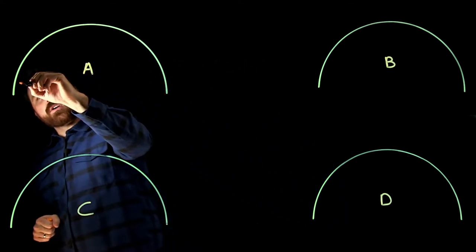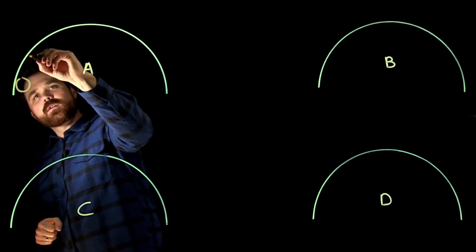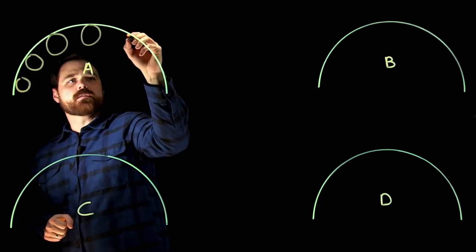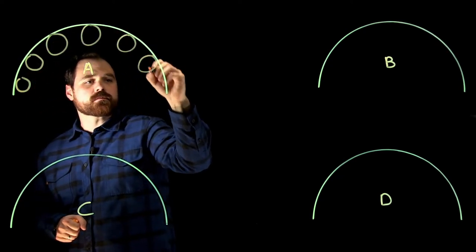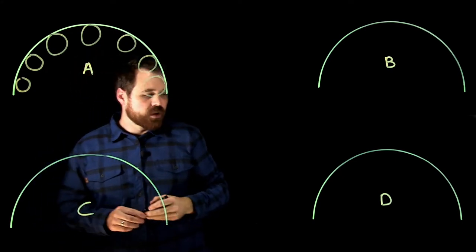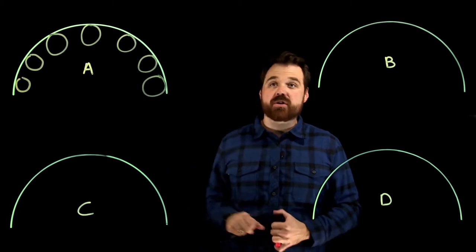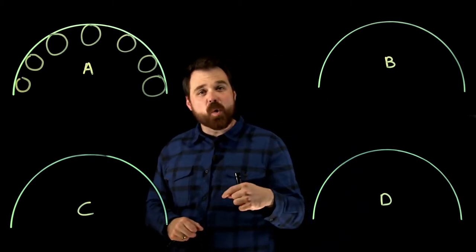So a NEMA rotor design A. So again this is just a cross-section of our rotor within our motor. The rotor bars are large and they are placed close to the surface kind of like that.